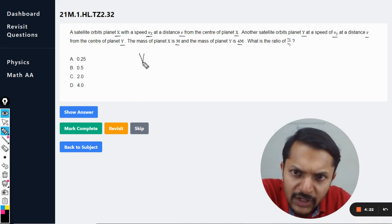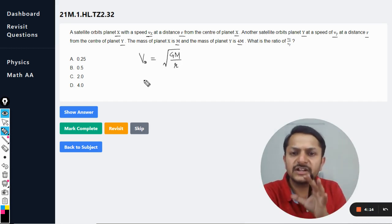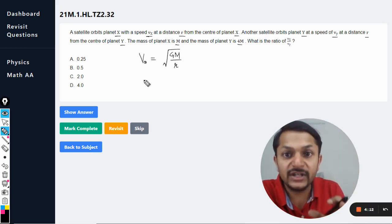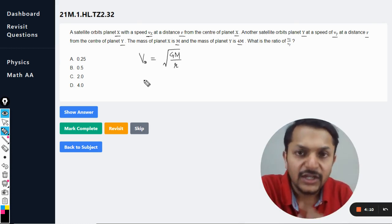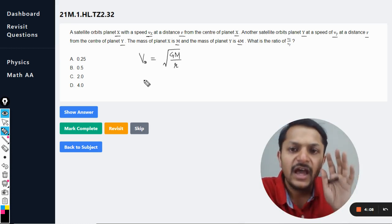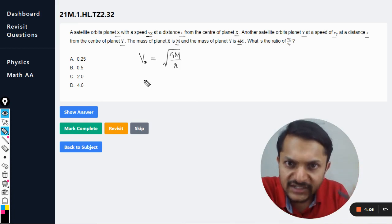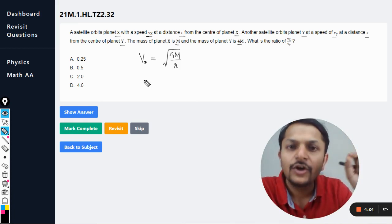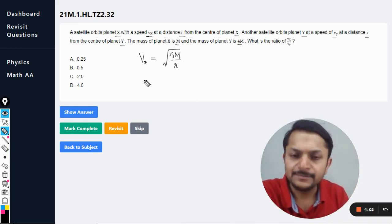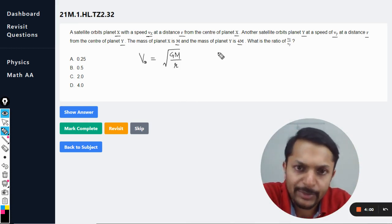Okay, so we have the formula for the orbital speed. The formula for the orbital speed is this, where G is the universal gravitation constant and capital M is the mass of planet, not the mass of satellite. And R is the distance of the satellite from the center of the planet. And we are just going to apply this.